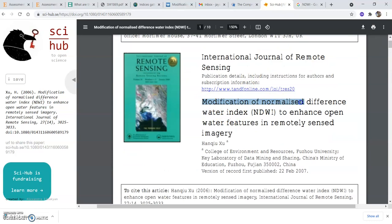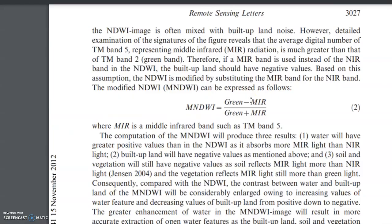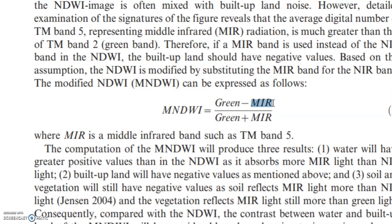That's why Xu published the original paper on the Modified Normalized Difference Water Index, titled 'Modification of Normalised Difference Water Index to Enhance Open Water Features in Remotely Sensed Imagery.' Xu in 2007 used the mid-infrared band instead of the near-infrared band. So in NDWI the formula is green minus near-infrared, but in MNDWI it is green minus mid-infrared.